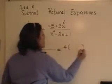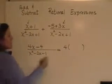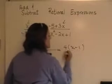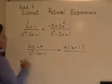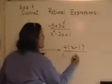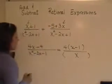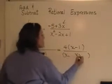And I see that there's a common factor of 4 in the numerator, and so I'll have an x minus 1 here. And downstairs here, I see a trinomial that will probably factor into the product of two binomials with an x in the front of each.